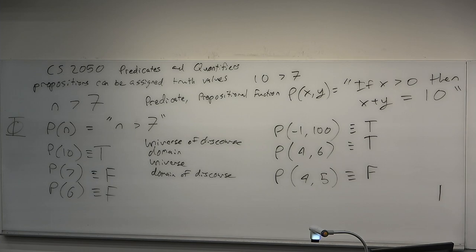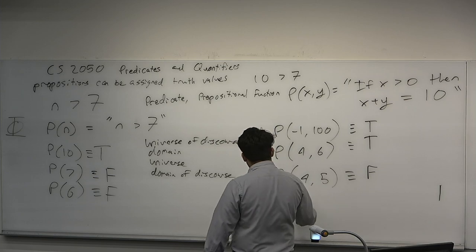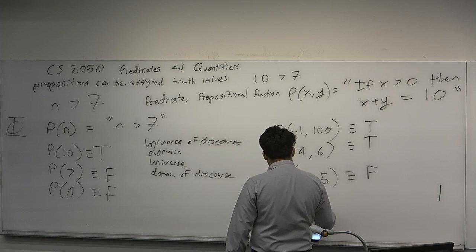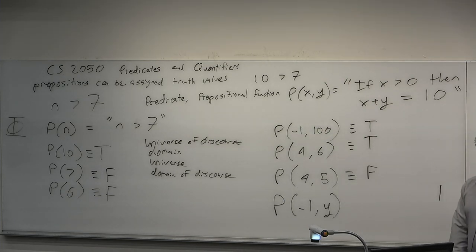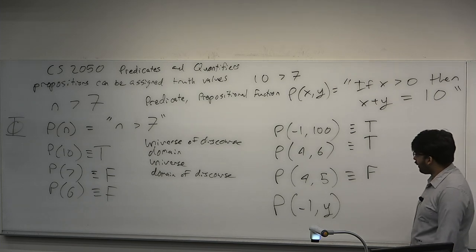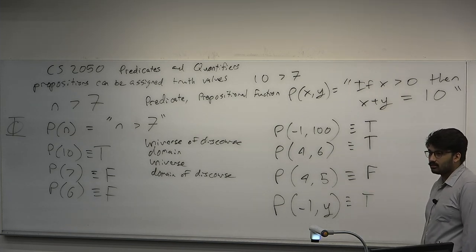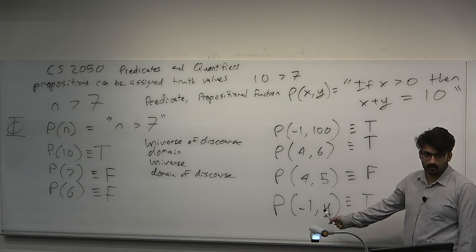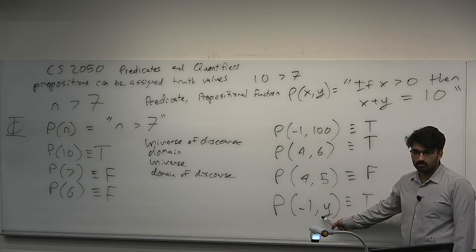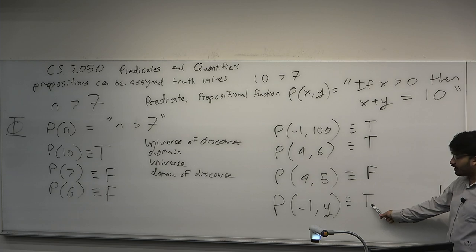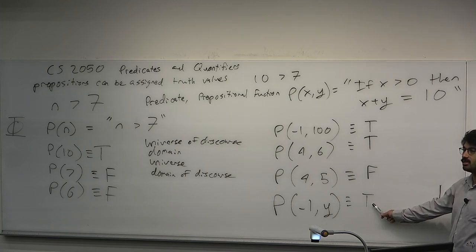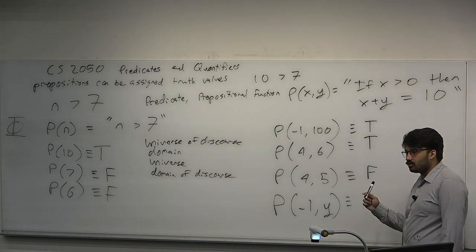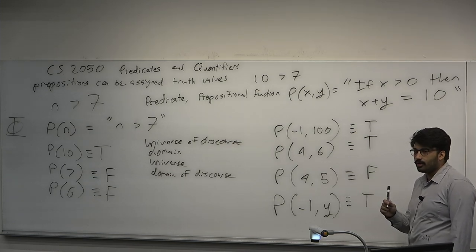Any questions just on the definition of a predicate so far? Pop quiz: What is P(-1, y)? True. First off, y is unevaluated. Is this a predicate or a proposition? It's a predicate. Yet we can assign it a truth value. Predicates become propositions only after we've evaluated all the variables. Even so, no matter what y is, as long as there's -1 here, the statement is true — because the premise is false, making the whole conditional true.